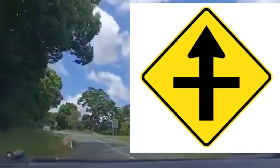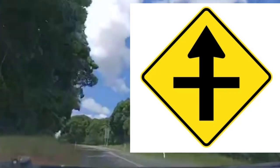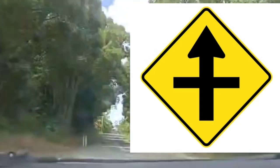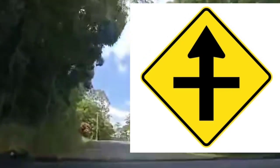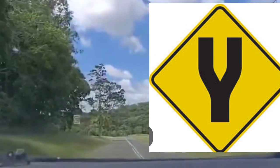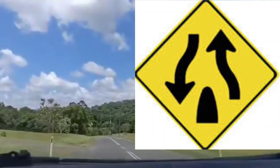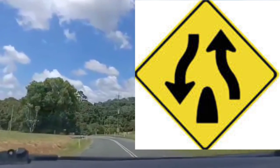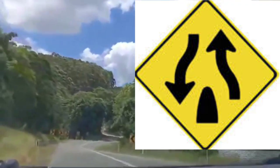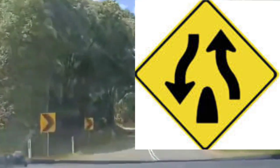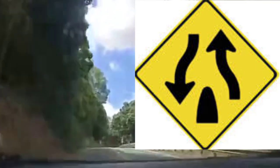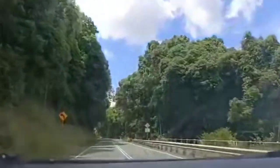Crossroad signs are meant to alert you to an upcoming intersection or another road that is crossing your path. They warn drivers to watch for incoming or turning traffic and be prepared to slow down or stop if necessary. The divided highway sign means that the two lanes of opposing traffic are divided by some type of physical barrier or median, such as guardrail, concrete barrier, or a strip of land. When roads are separated by barriers, the risk of accidents is reduced substantially, since all vehicles moving in the same direction means head-on collisions cannot occur.